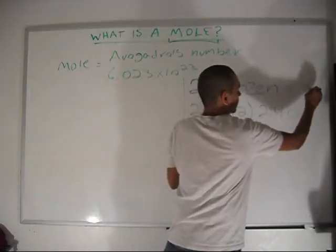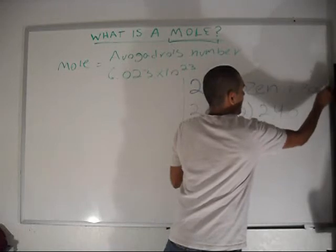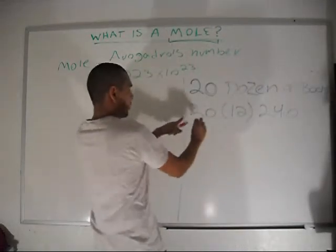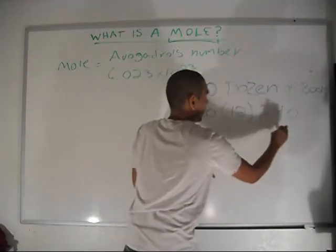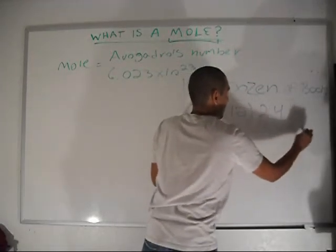Let's say you're talking about books. A dozen of books, it will be equals to 20 times 12 equals to 240 books. Right?